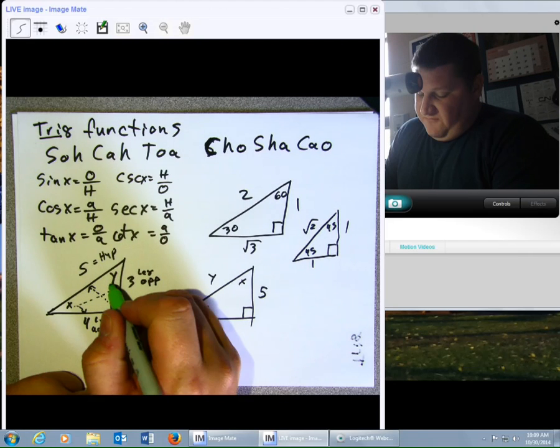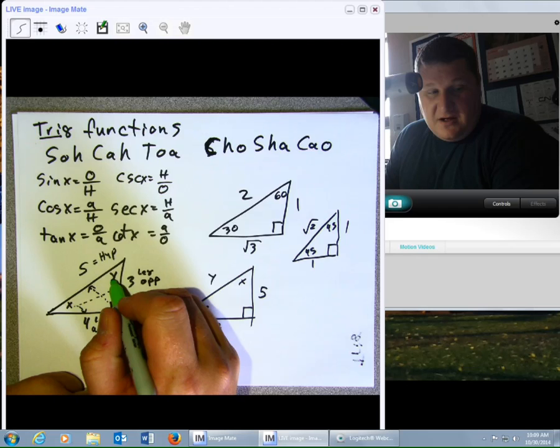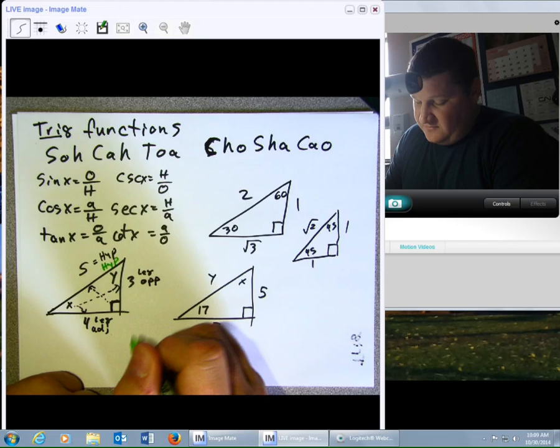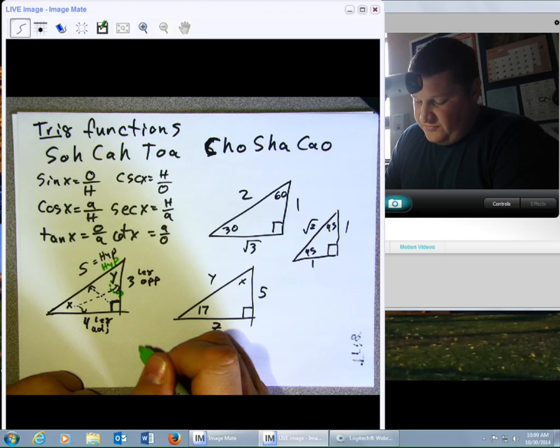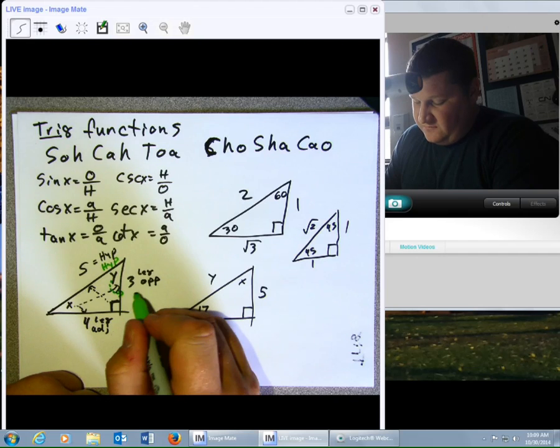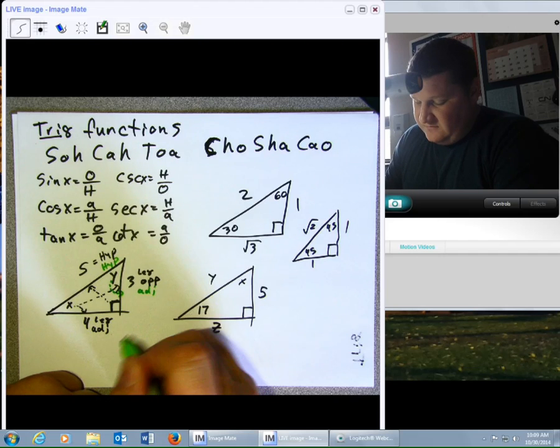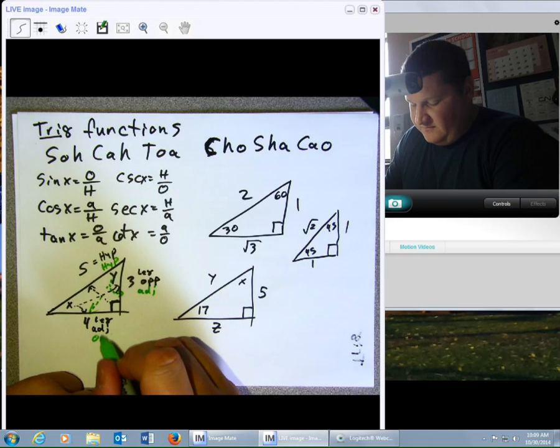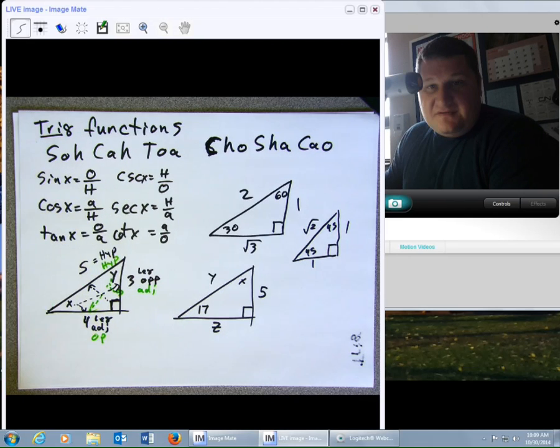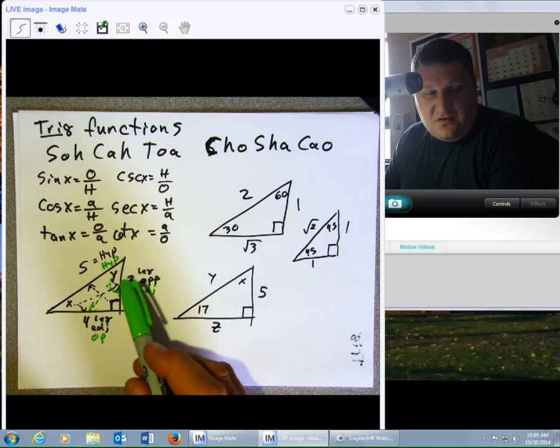Now, it is opposite that angle. If, however, we were talking about this angle, angle Y, we would say that this is still the hypotenuse, but now the 3 is right next to the angle I'm talking about, so it becomes adjacent. And this 4 is now way over here, so it becomes opposite.